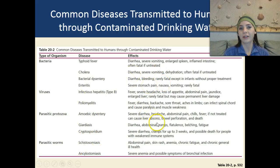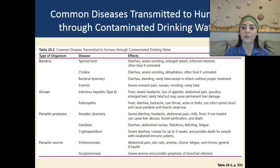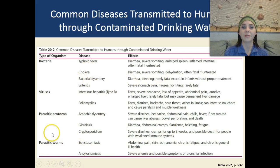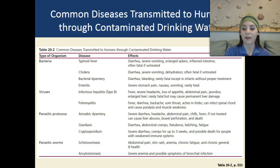Parasitic protozoa can cause amoebic dysentery — dehydration from diarrhea and vomiting, liver abscesses, and bowel perforation, meaning tears in your intestines, and if untreated, death. Giardia causes diarrhea, abdominal cramps, flatulence, belching, and fatigue. Cryptosporidium causes diarrhea, vomiting, and cramps, and can cause death in people who have weakened immune systems. We also have parasitic worms: schistosomiasis can cause abdominal pain, rashes, fatigue, and bad health, as well as ancylostomiasis, which can cause severe anemia and possible symptoms of bronchial infections.